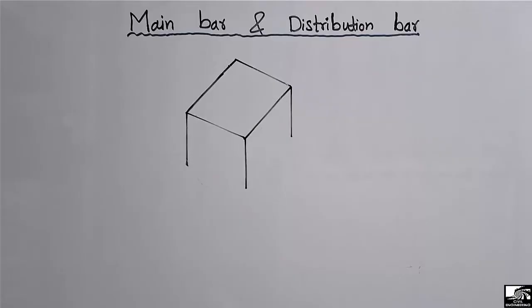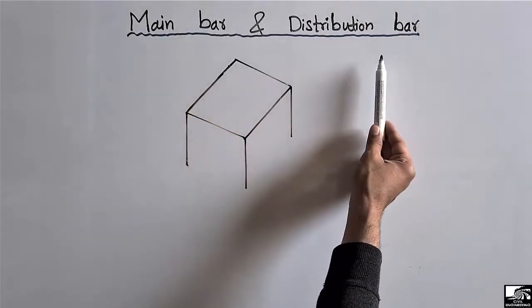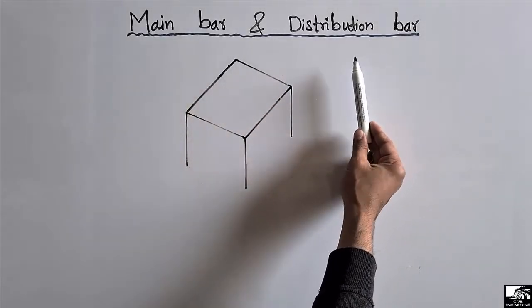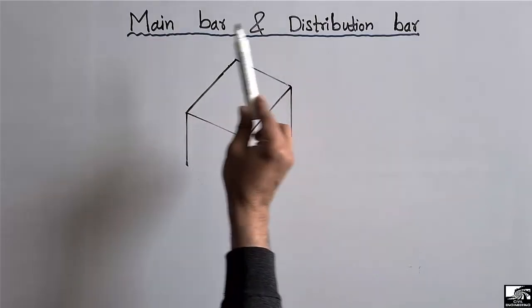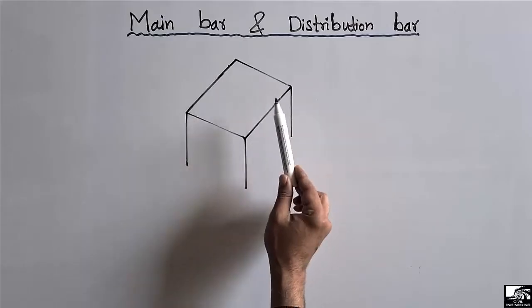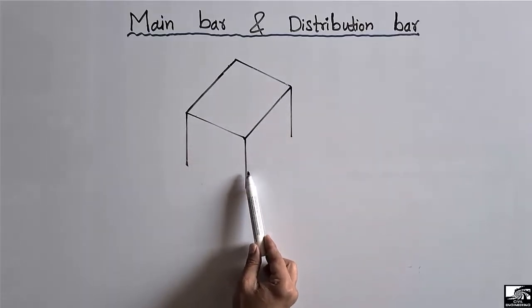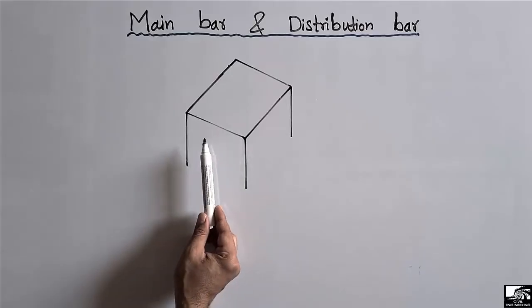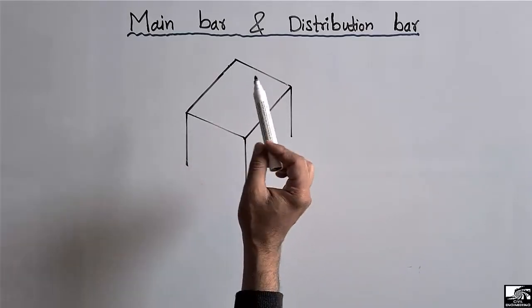Hello guys, welcome back to 7 Engineering YouTube channel. Please subscribe to our channel for daily 7 Engineering videos. Today's lecture, we are going to differentiate between the main bar and the distribution bar in case of slabs. We mostly differentiate these two types of bars. Consider that this is any slab, supported by beams and columns, and we are going to differentiate between these two types of bars by considering this figure.